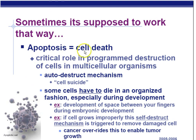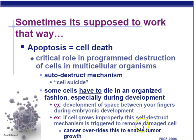Apoptosis — sometimes cell death is supposed to work this way. Apoptosis is a programmed destruction of cells in multicellular organisms — basically cell suicide, not a destructive mechanism. For example, you had skin between your fingers and toes, and those cells were destroyed by apoptosis when the lysosomes released their enzymes into the cell. If the cell grows improperly, the self-destruct mechanism is triggered to remove the damaged cell. We also talk about the P53 gene, which can cause the cell to self-destruct if it's cancerous — done by chemistry, this removes cancerous cells.